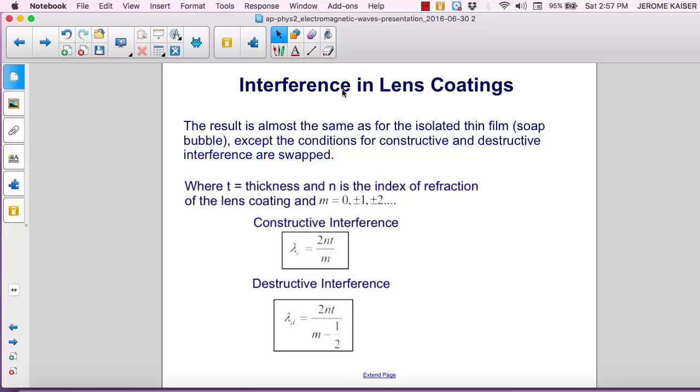We're going to use T again as the thickness, n as the index of refraction, and we're going to use m being the number of wavelengths as an integer, zero positive or negative. For constructive interference, we get lambda sub c equals 2nT over m. Again, n is the refractive index, T is the thickness, and m is the number of wavelengths.